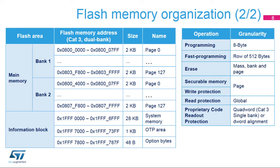The first table details the memory organization based on a main flash memory area and an information block for category 3 microcontrollers with dual bank architecture. The second table details the granularity of flash memory operations: programming is done on 8-byte double words, fast programming on a row of 512 bytes, and erase with mass, bank or page granularity. The securable memory is aligned on pages, write protection is done per page, and read protection is global. Proprietary code readout protection is based on programmable start and end addresses aligned on quad words or double words.